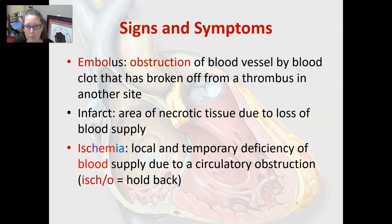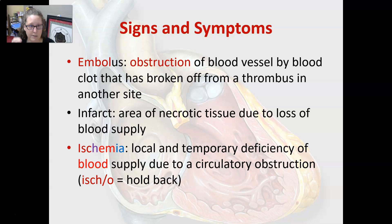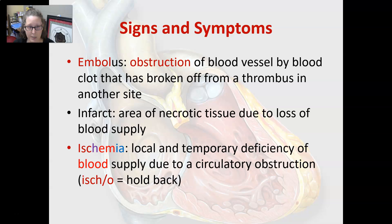An infarct is an area of necrotic or dead tissue due to the loss of blood supply, often because of an embolus or a thrombus. Either the artery got completely plugged up with plaque or a clot obstructed it, and then anything downstream that was supposed to be fed by that artery is no longer getting blood and starts to die quickly. Without oxygen, cells can't make ATP, and without ATP, they cannot stay alive. Ischemia is a local and temporary deficiency of blood supply due to a circulatory obstruction.